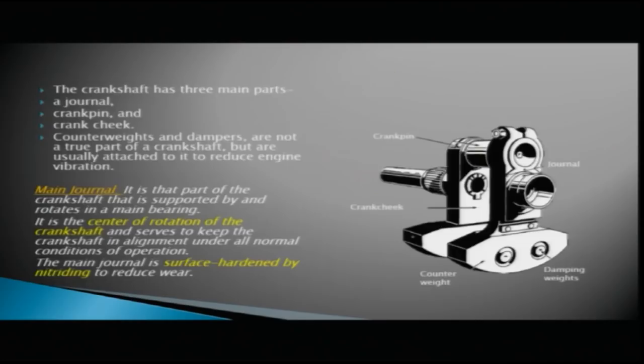The crankshaft has three main parts: a journal, a crank pin, and a crank cheek. Counterweights and dampers are also employed in some crankshafts — they are not a true part of the crankshaft, but are usually attached to it to reduce engine vibration.